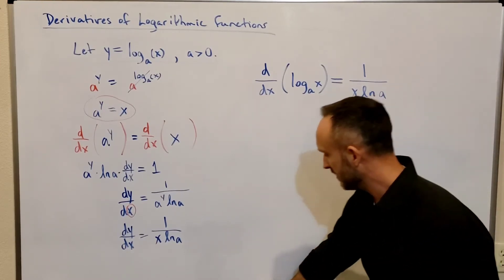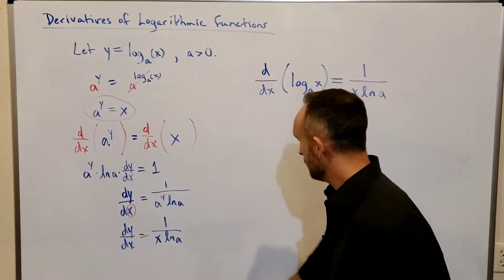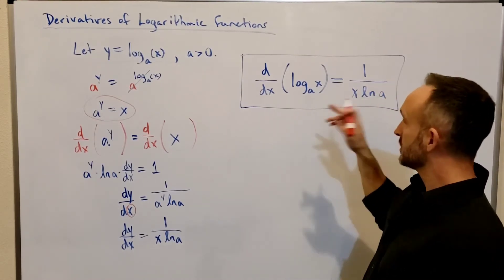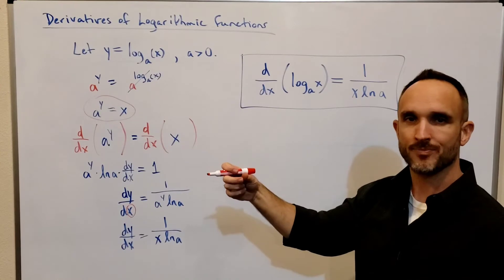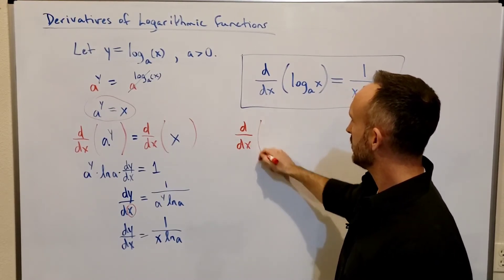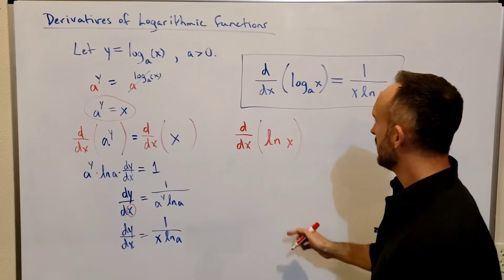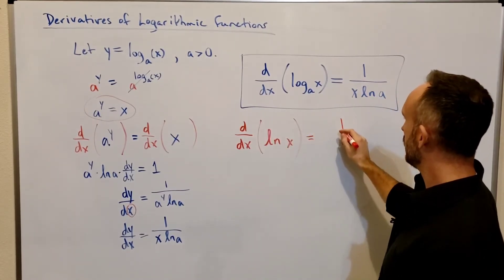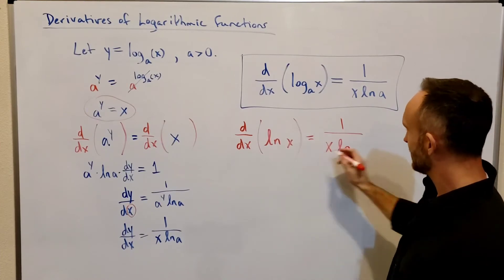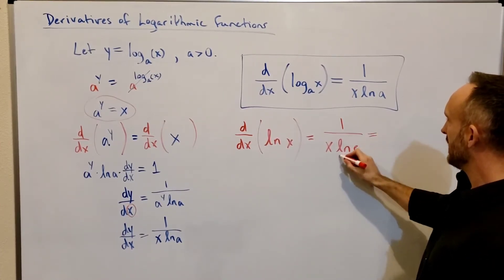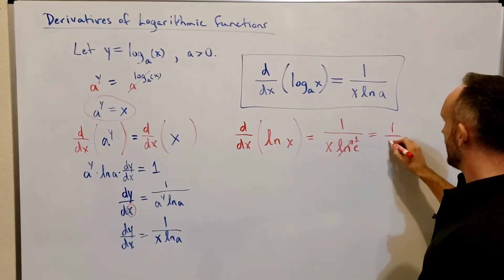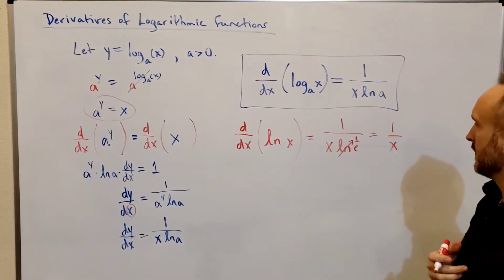Most commonly you'll deal with the log with base e — the natural log. For example, the derivative of the natural log of x, which is base e, turns into 1 over x times the natural log of e. Since the natural log of e is just 1, the derivative of the natural log of x simplifies to just 1 over x. That's the most common logarithmic derivative you'll see.